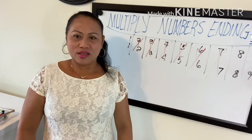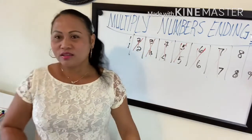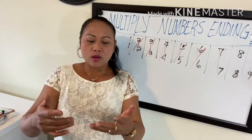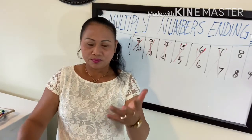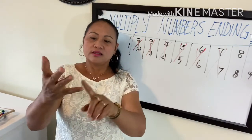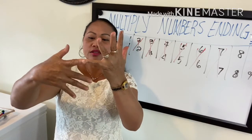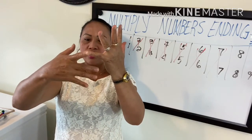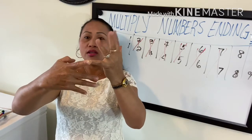You can also do six times nine this way: count to six and to nine on your fingers. The lower count gives five, and four times one is four, so the answer is 54.